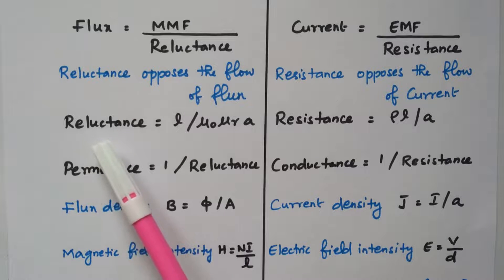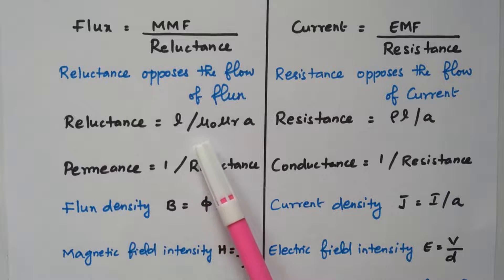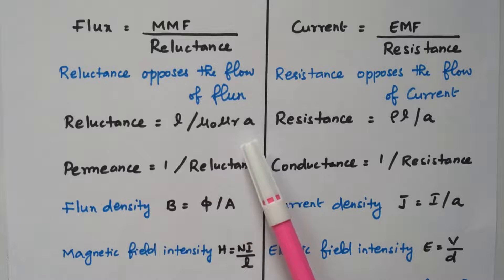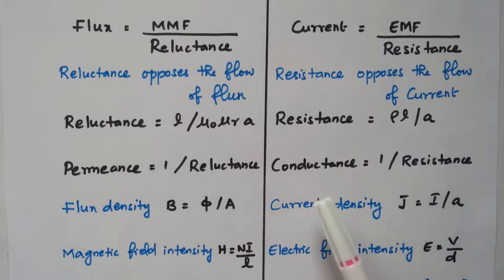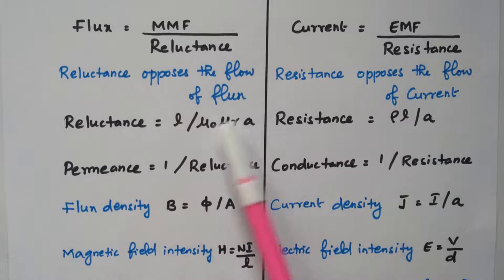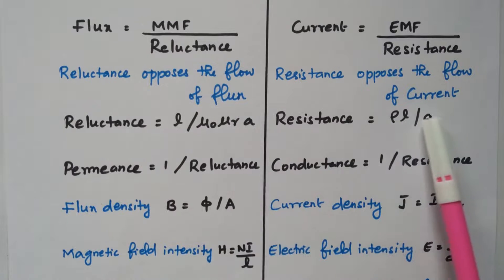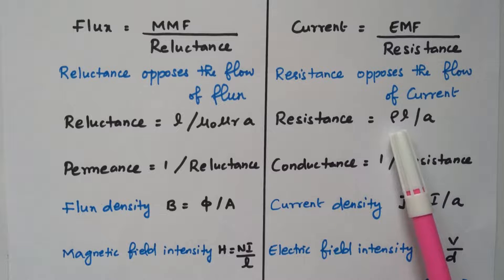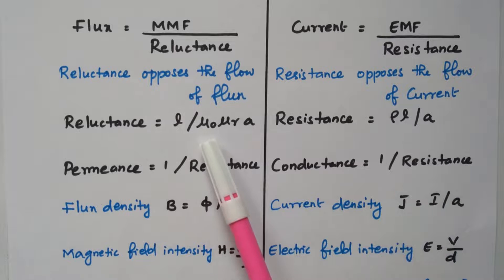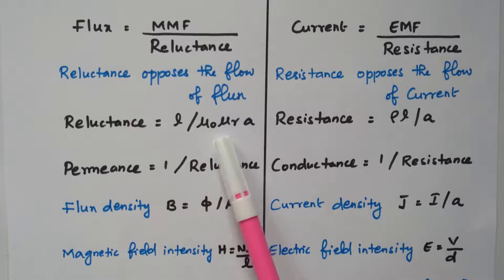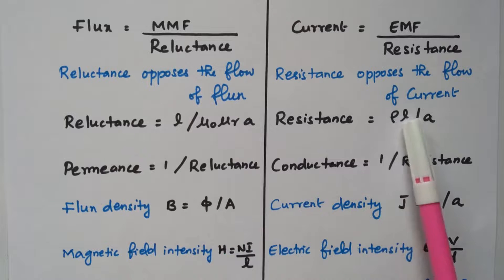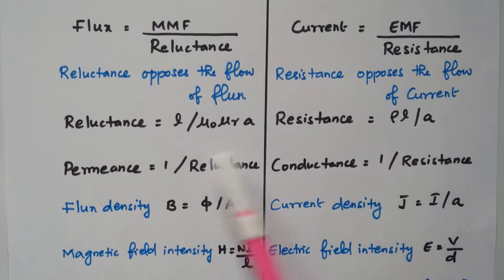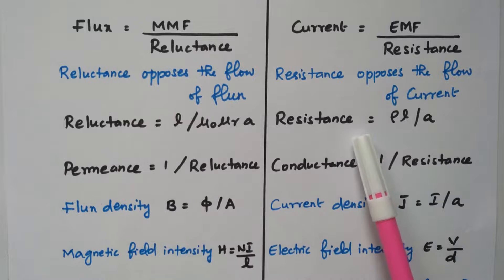Reluctance is given by L / (μ₀ · μᵣ · A), which is very similar to resistance given by R = ρL / A. The L/A part is similar in both cases; the difference is that resistance uses resistivity ρ in the numerator, while reluctance uses 1/(μ₀ · μᵣ) in the denominator.